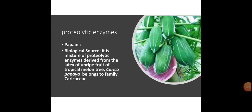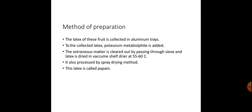Today we will discuss proteolytic enzymes. The first enzyme is papain. Its biological source is a mixture of proteolytic enzymes derived from the latex of the unripe fruit of the tropical melon tree Carica papaya, belonging to family Caricaceae.